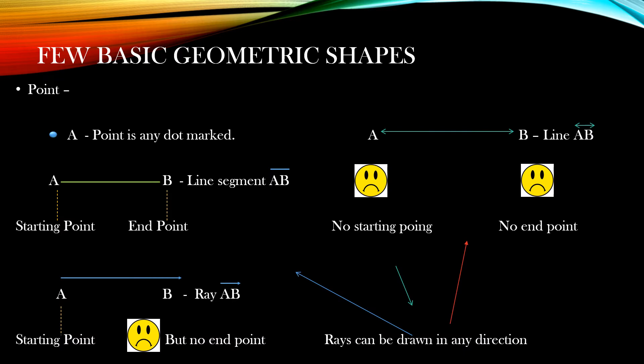Now let's see a few basic geometrical shapes that we already know. First is a point. A point is any dot marked, and how to name the point — here you can see point A. It is any dot you can mark; that point is always denoted by a capital letter, that is point A, as you all can see here.